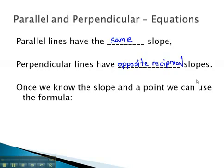Once we know the slope and a point on the line, we can use it to find the equation with the formula y minus y1 equals m times x minus x1, or the point slope equation.